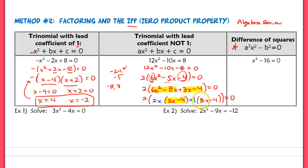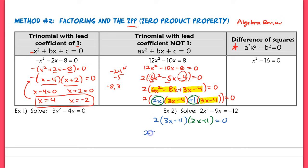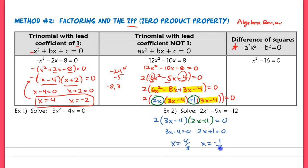Because you have the same thing written in both parentheses, you can pull that out. So you have 3x minus 4, then group the two terms you pulled out — 2x plus 1 — put those together, and keep the 2 on the outside, set it all equal to 0. Now, 2 equals 0 is not a solution — it doesn't produce any solution. So if I set 3x minus 4 equal to 0 and 2x plus 1 equal to 0, I get solutions of 4 thirds and negative 1 half. That's factoring with a lead coefficient that is not 1.